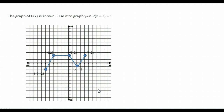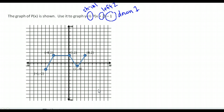Let's take a look using the same original graph with some different transformations. This minus 1 on the end would move the graph down 1. The plus 2 on the inside is going to shift it to the left 2. And the one-half in the front is going to shrink it vertically by one-half. So we're going to take each of our y values, multiply by one-half, and then move it down 1.